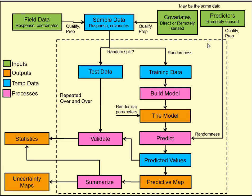Here we have our overall modeling process with the different steps. Our covariates and predictors — these could be the same or they could be separate. Our field data or sample data comes typically from a set of points where we've matched our covariates to our response. Then we do a split between test and training data, build our model, and bring our predictors in to do a prediction.